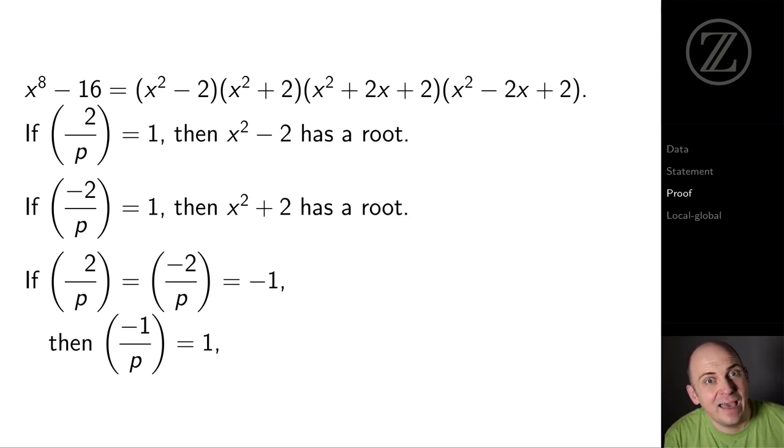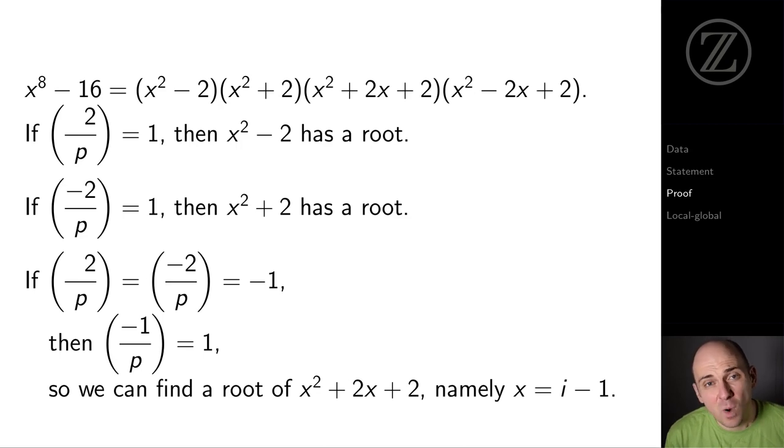That means I've got i in the ring Z mod p, and I can use that to find a root of x squared plus 2x plus 2. Namely, i minus 1 is a root of x squared plus 2x plus 2.